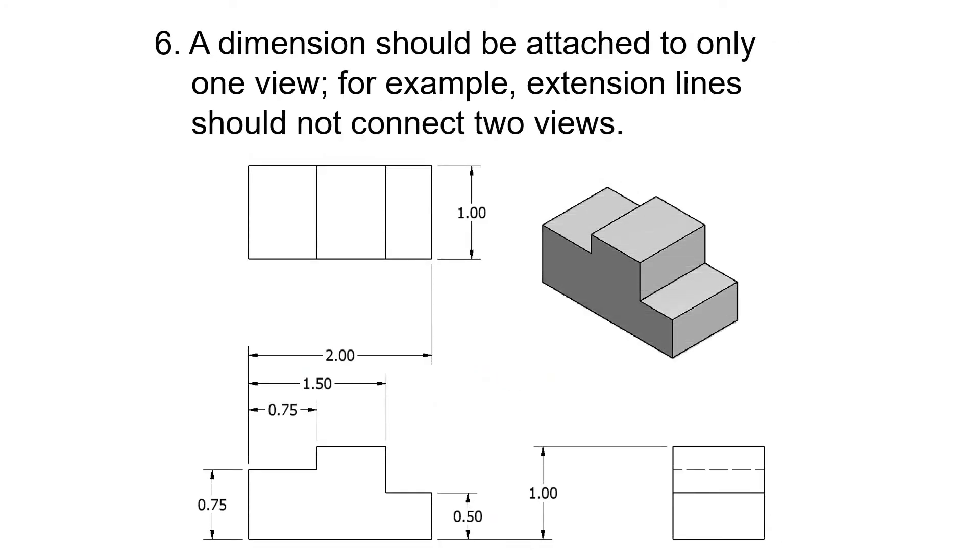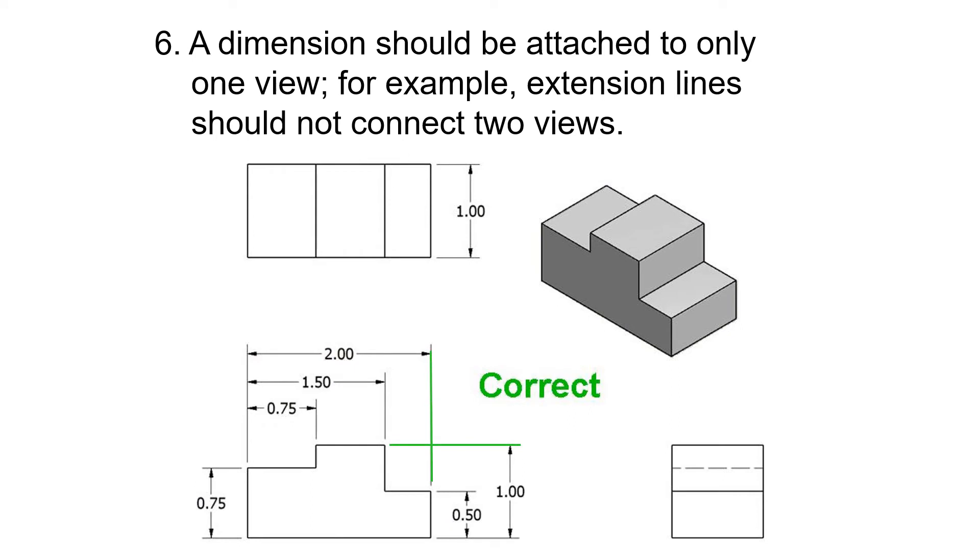A dimension should be attached to only one view. For example, extension lines should not connect two views. I see this very rarely, but I do see it every so often. It should look like that.